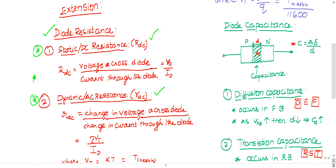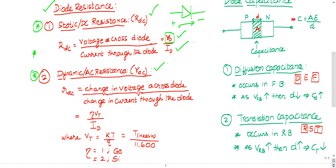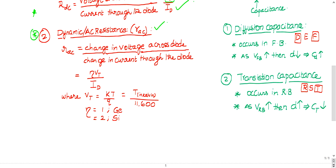Static resistance of the diode is defined as the voltage across the diode at a given instant divided by the current flowing through the diode at that instant — it is the instantaneous voltage with respect to instantaneous current. Dynamic or AC resistance is defined as the change in voltage across the diode from time t1 to t2.